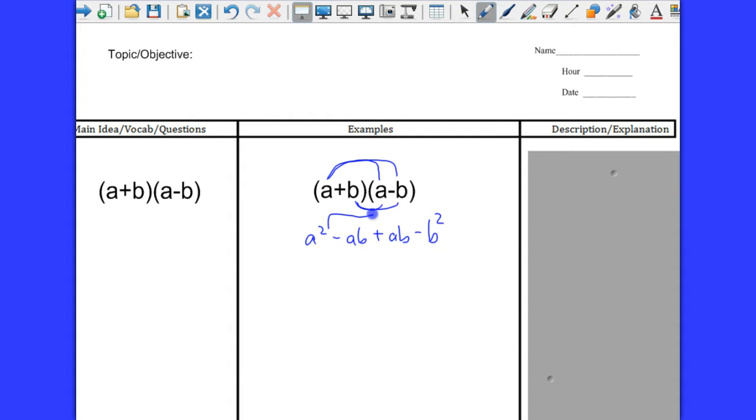So if we look right here, we can see that these two terms are like terms and they add to zero. So the only thing that's left is a squared minus b squared. And that pattern will always be true. Now notice if a is this number and b is this number, all we have to do is square that value and square that value, put a minus sign in between them.